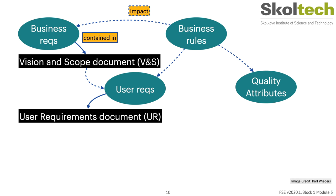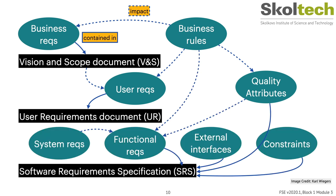Ideally, this information is represented by different representatives of the users. User requirements also describe what the user has to be able to do with the system. Functional requirements determine what the product's behavior must be given the circumstances, and what the developers must create for users to perform their tasks — the user needs in the context of their business requirements.